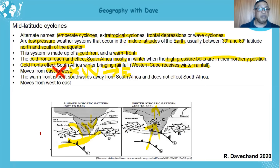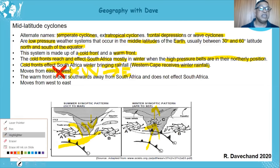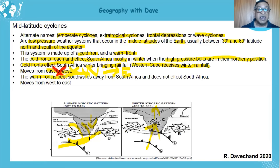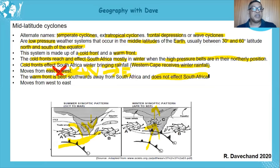Briefly: the warm front bends southwards away from the cold front, so it does not affect South Africa. We can sum up that the cold front affects South Africa and not the warm front.